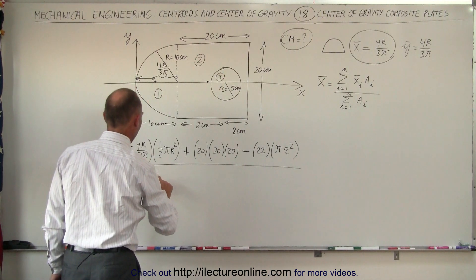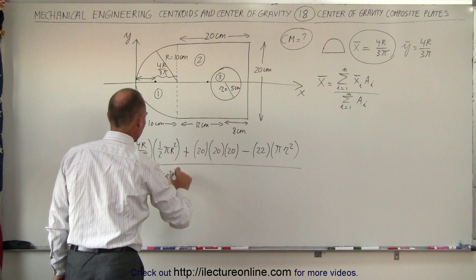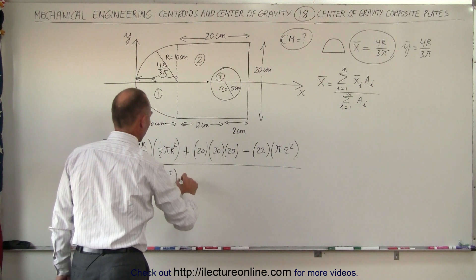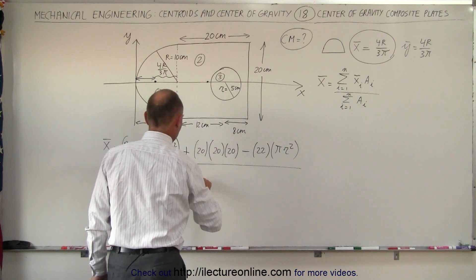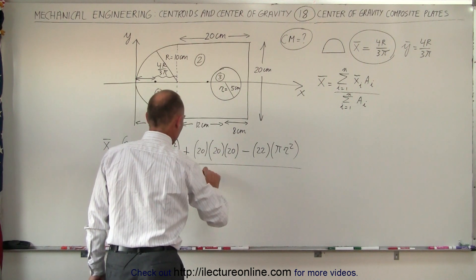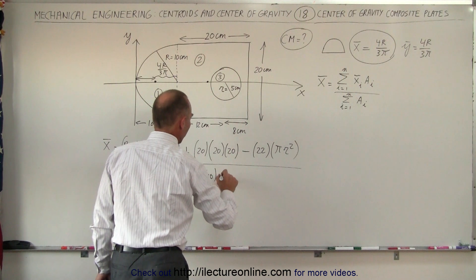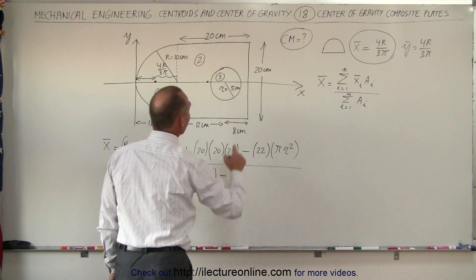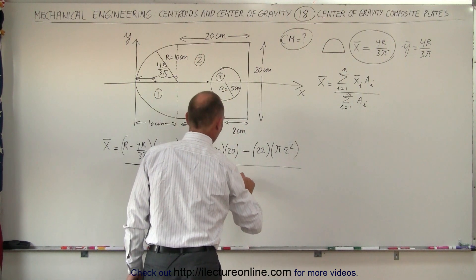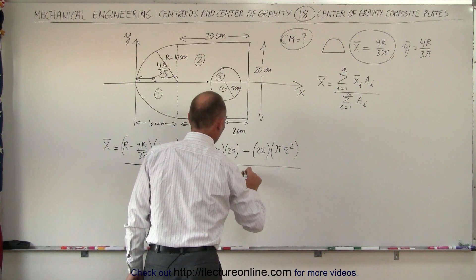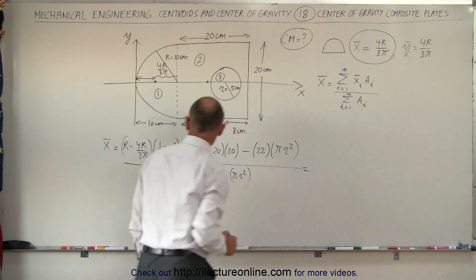We divide the whole thing by the sum of the areas. We have one-half π r squared for the semicircle, plus the area of the rectangle which is 20 times 20, minus the area of the circle which is π r squared — because we subtract the hole from the denominator as well. Now let's plug in some numbers.